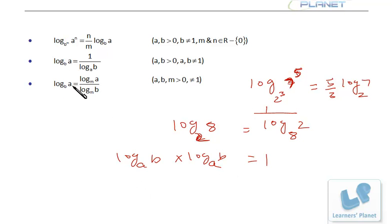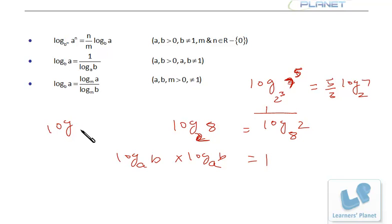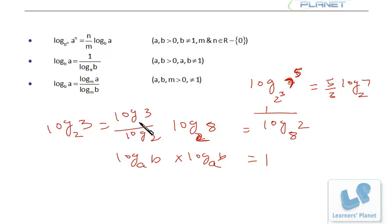Here, if a new base m is introduced, log a to the base b will be log a to the base m divided by log b to the base m. For example, log 3 to the base 2 is actually log 3 divided by log 2, where this base can be any other number — maybe e — whatever. This is how you can change the base of the logarithm.